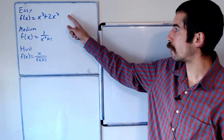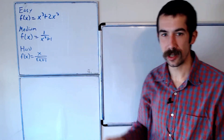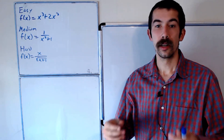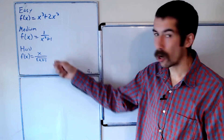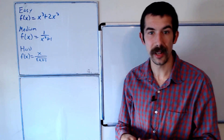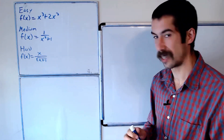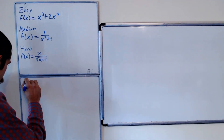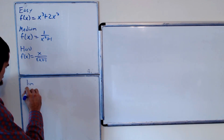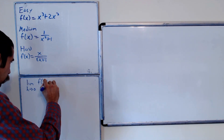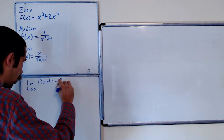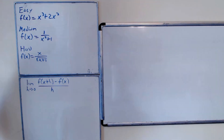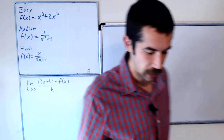Today I'm going to show you how to take the derivative of three functions using the limit definition of the derivative. If you want to skip ahead to the medium or hard questions, take a look at the time in the description, but I'm going to start with easy. We want to evaluate the limit as h goes to zero of f(x+h) minus f(x) all over h — that's what the limit definition of the derivative is.